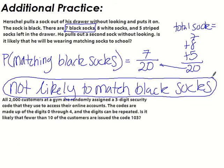That's another way we can make predictions — we don't actually have to solve a proportion. We can use the theoretical probability to make decisions based on the probability value. All 2,000 customers in a gym are randomly assigned a three-digit security code to access their online account.